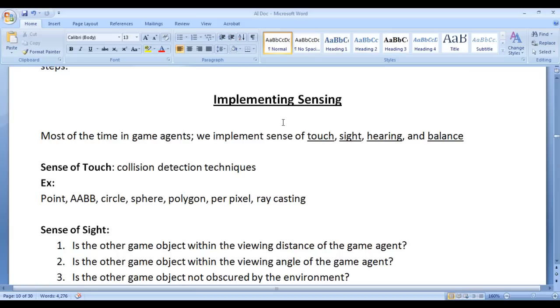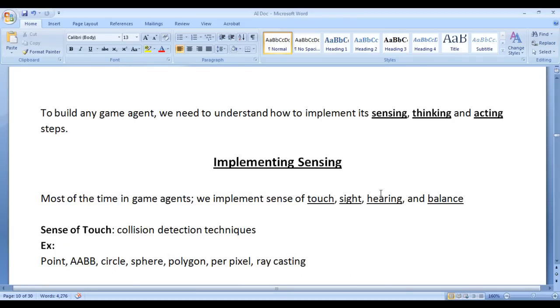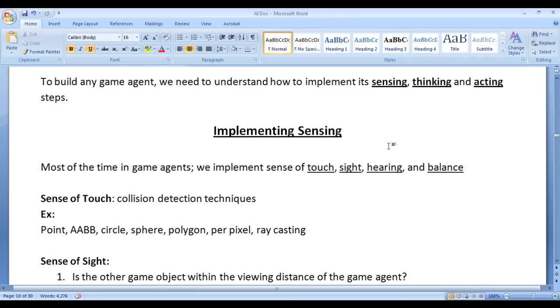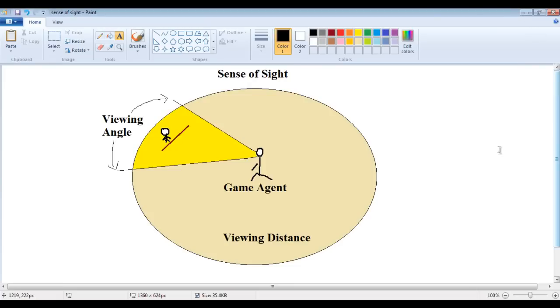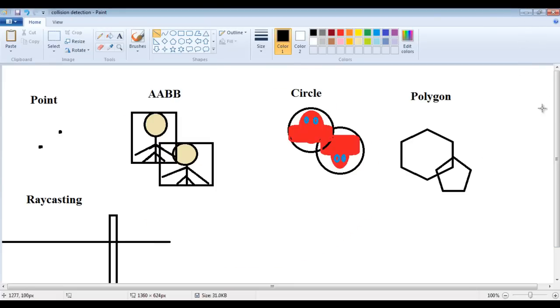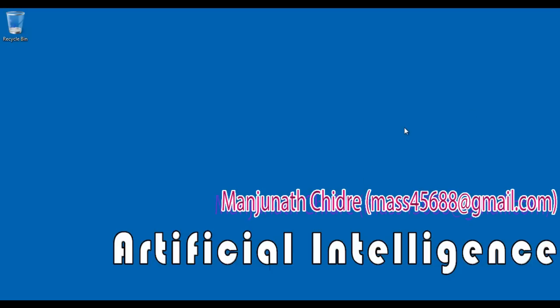I hope you guys have clearly understood how we implement the sensing step, covering Sense of Touch, Sense of Sight, Sense of Hearing, Sense of Smell, Sense of Balance, and more. In the next video tutorial, we will understand how to implement the thinking step. Please subscribe to my YouTube channel and don't forget to like, comment and share these videos. Keep learning, keep coding, keep sharing. Thank you guys, see you in the next tutorial.